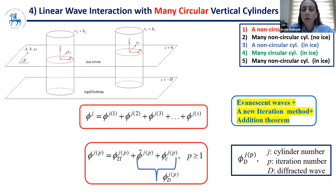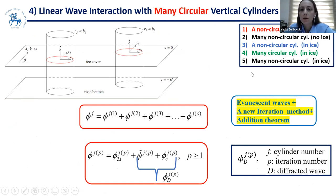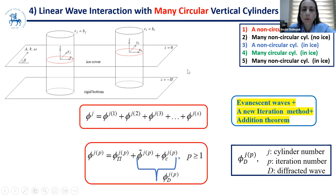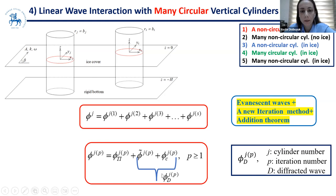Now we have many circular cylinders under an infinite continuous ice plate, with evanescent waves present. Problems one and two had no evanescent waves; problems three, four, and five have them. We use an iterative method and addition theorem for Bessel functions. Because the cylinders are circular there is no asymptotic solution here, but if the cylinders are non-circular we modify the asymptotic method. In the iterative method, the total velocity potential for the j-th cylinder is separated into incident and diffracted parts, and the diffracted part is further split into solution without and with account for edge conditions.